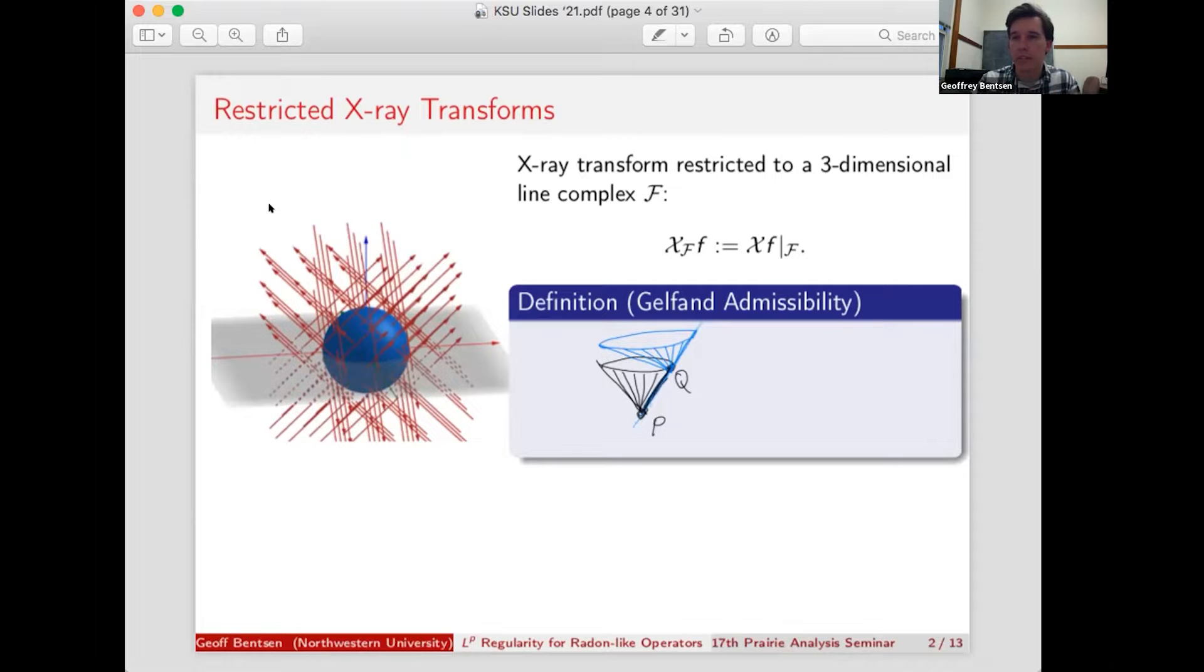Basically, what you do is you take any point P in the space, and you look at all the lines that are in your complex going through that point. That forms a cone. Now, if you go along one of those lines to another point Q and look at the cone of lines through that point, Gelfand admissibility condition says that those cones must be tangent to one another along the line connecting P and Q.